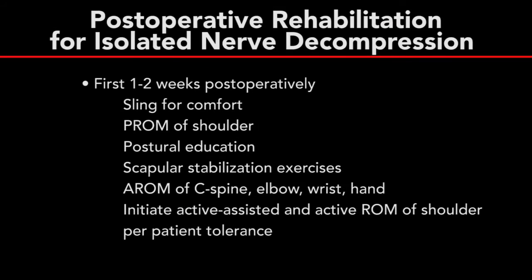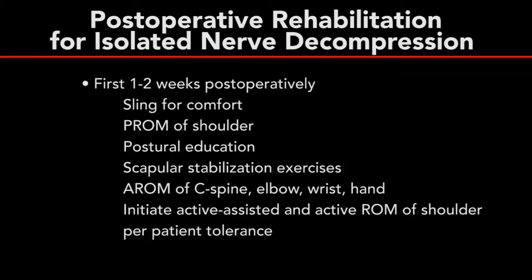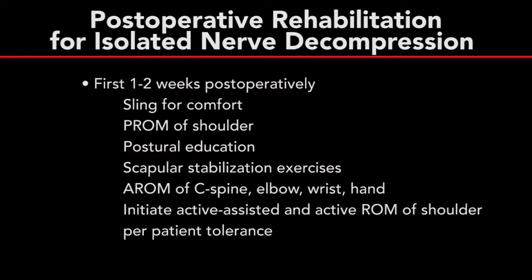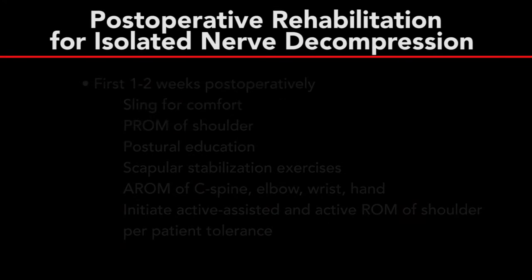Following nerve decompression surgery, postoperative rehabilitation begins with placing the patient in a standard sling for one to two weeks. During this time, passive range of motion of the shoulder, along with other exercises, are initiated. Active assisted and active range of motion are also initiated to the level of the patient's tolerance.